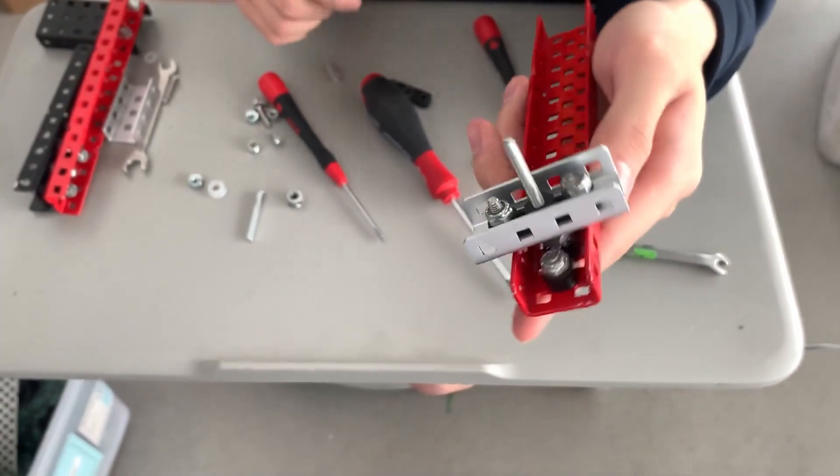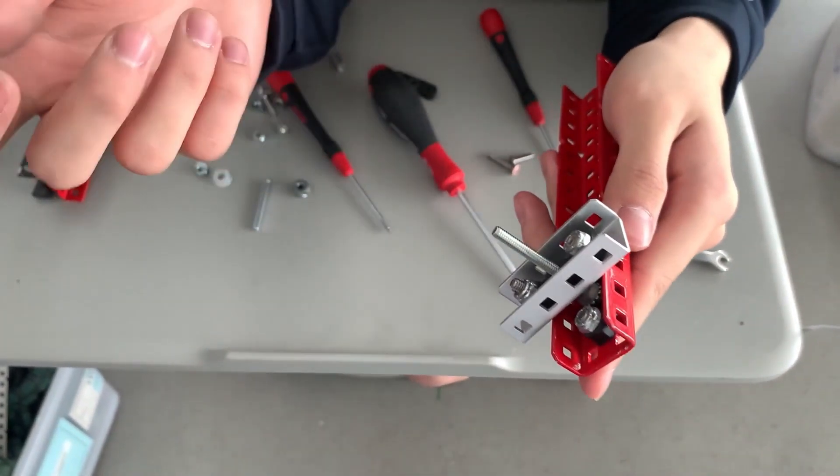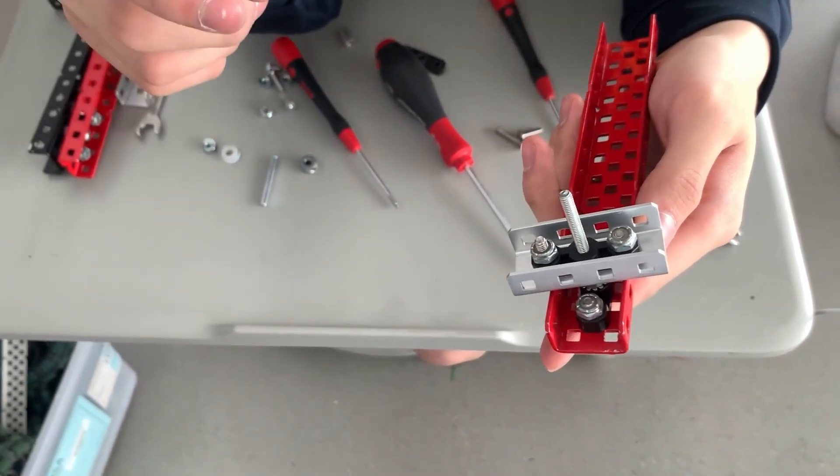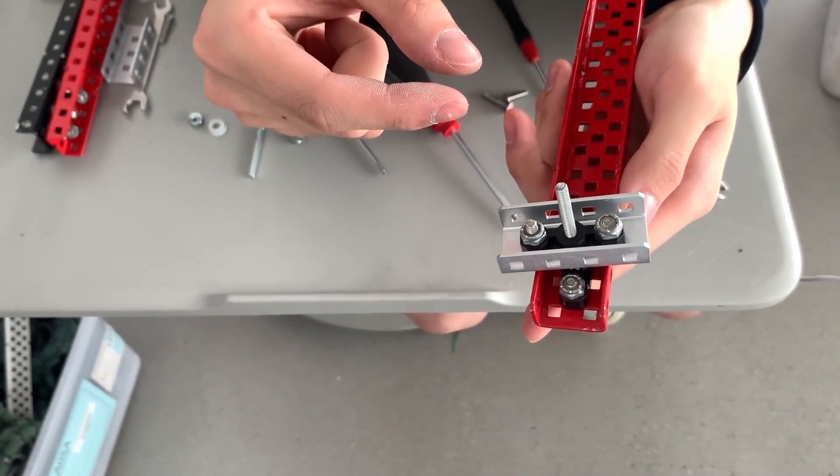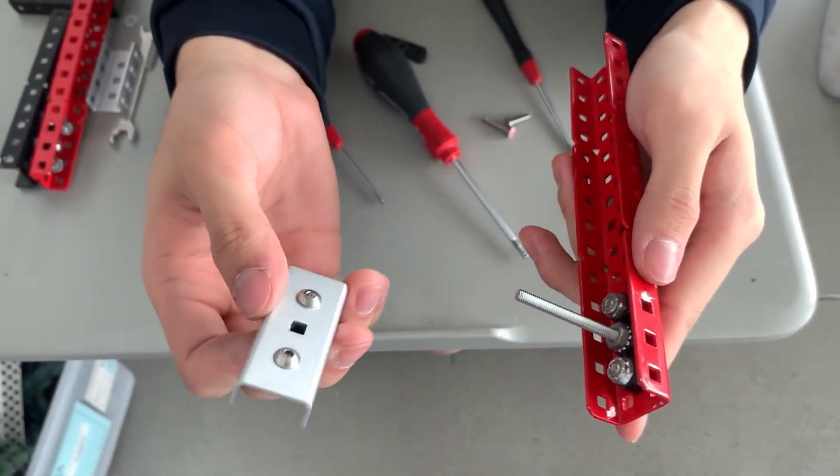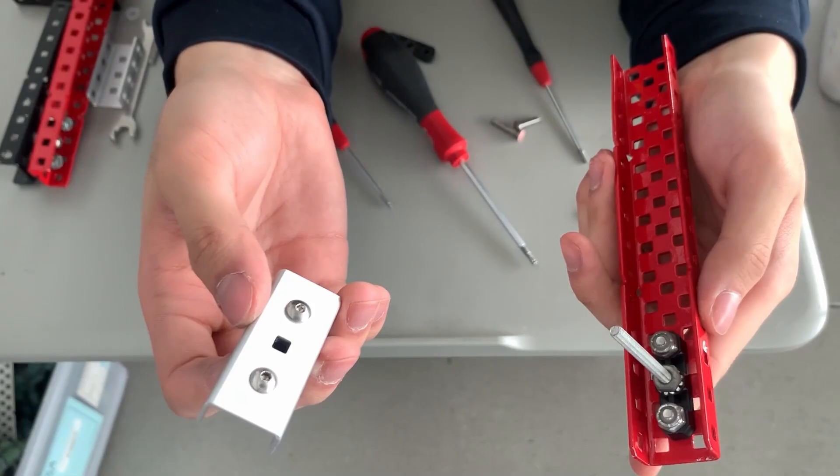This idea of using a screw here can actually also be extended. For example, I've seen teams use rounded standoffs as their joints. Since they're a lot thicker, they're going to be a lot stronger. But essentially, this is the basic idea of how a screw joint works.